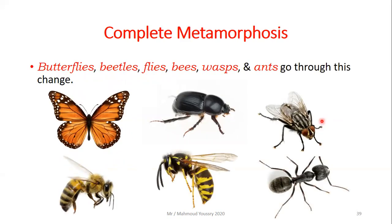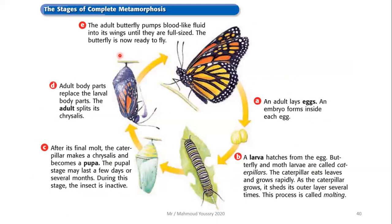Butterflies, beetles, flies, bees, wasps, and ants all undergo complete metamorphosis. In the butterfly's life cycle: an adult lays eggs, a larva hatches from each egg — butterfly and moth larvae are called caterpillars. The caterpillar eats leaves and grows rapidly, shedding its outer layer several times in a process called molting.